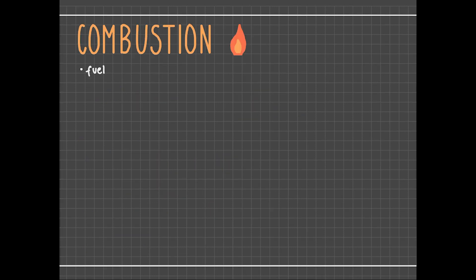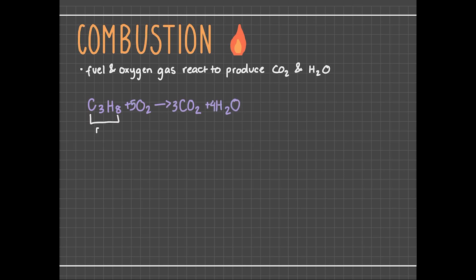Another type of reaction is a combustion reaction. This kind of reaction is pretty fun to see because flames are often produced. In a combustion reaction, a fuel and oxygen gas react to produce carbon dioxide and water. For example, propane and oxygen gas produce carbon dioxide and water, so this reaction is a combustion.